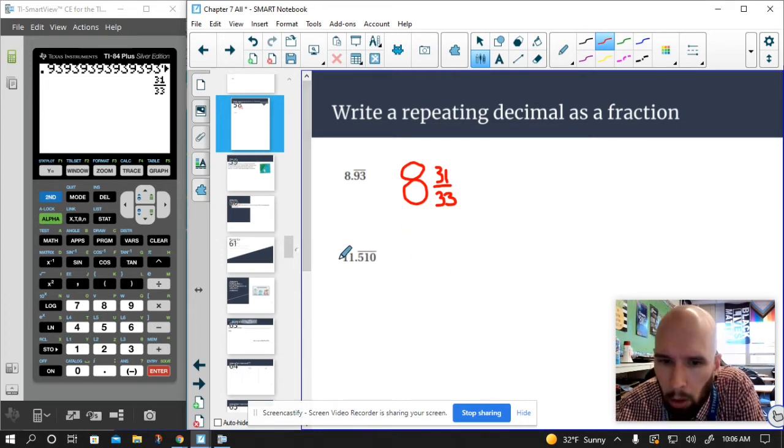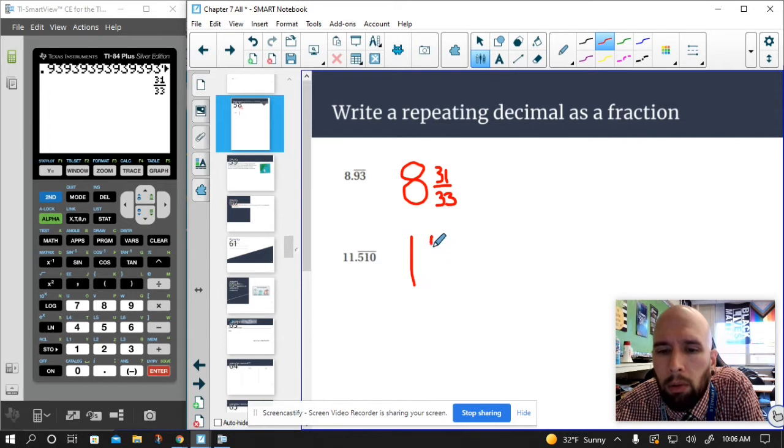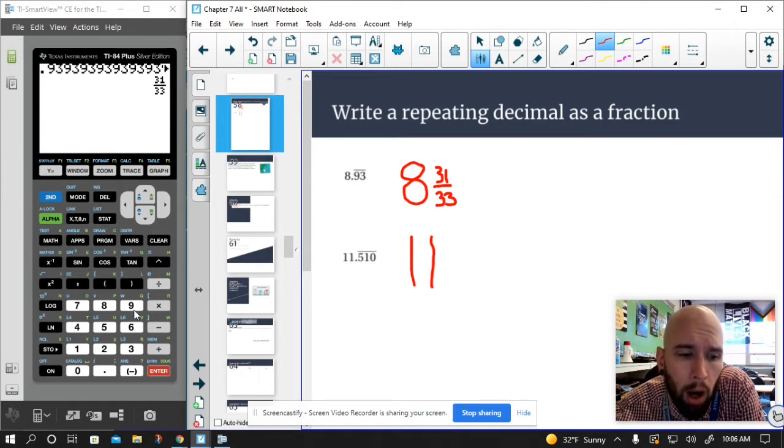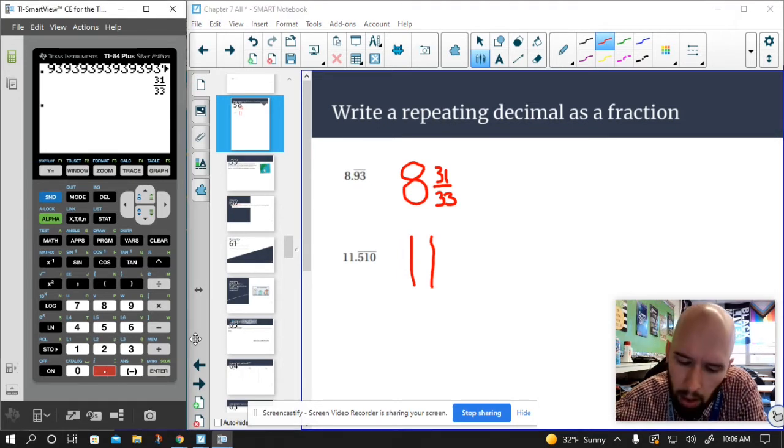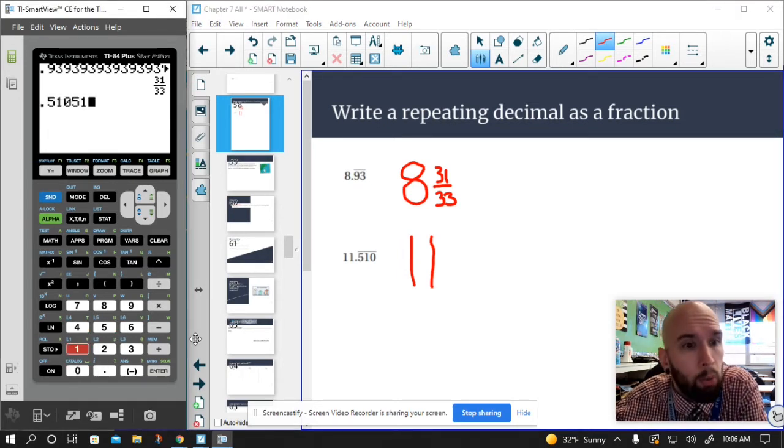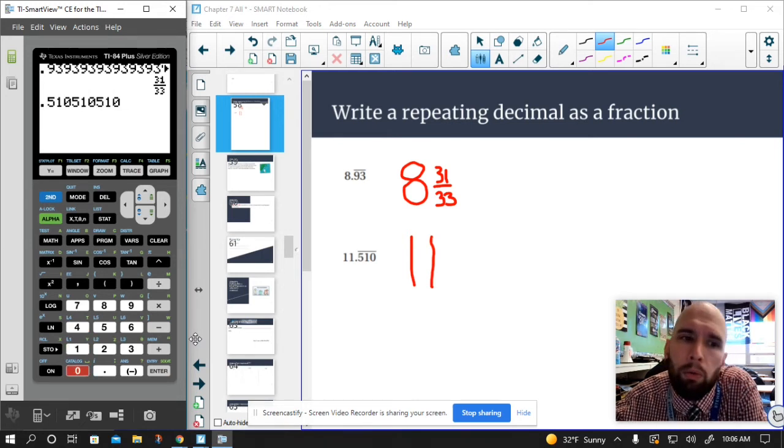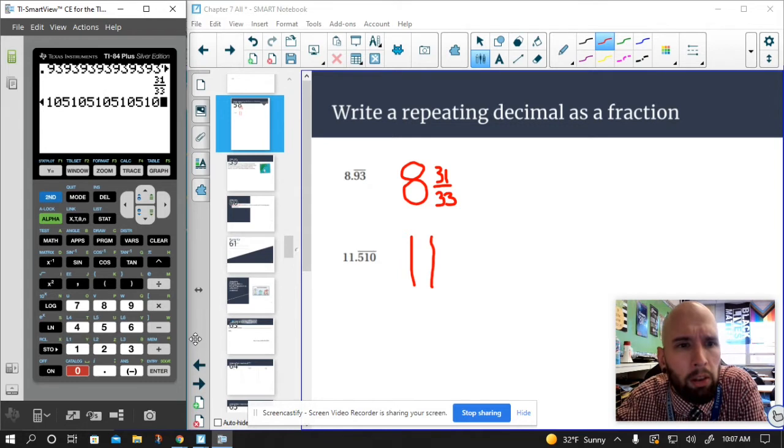A second one. 11 is 11. So let's just write out 11. There you go. Perfect. And I have 510. So I'm going to type out 0.510, 510, 510, 510, 510, 510. And you do 510 until you either hit the second line or it kind of goes off the screen like so.